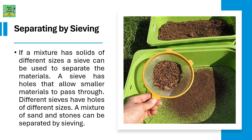Separating by sieving: a mixture has solids of different sizes. A sieve can be used to separate the materials. A sieve has holes that allow smaller materials to pass through. Different sieves have holes of different sizes. A mixture of sand and stones can be separated by sieving.